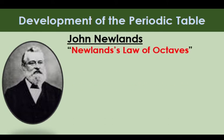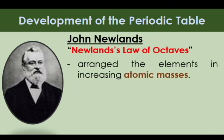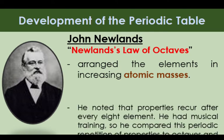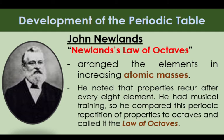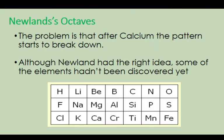Next was John Newlands, known for his Law of Octaves. He arranged the elements according to increasing atomic masses and noted that properties recur after every eight elements. Since he had musical training, he compared this periodic repetition of properties to octaves and called it the Law of Octaves. However, Newlands' Law of Octaves had some irregularities — after calcium, the pattern starts to break down, and some elements hadn't been discovered yet.